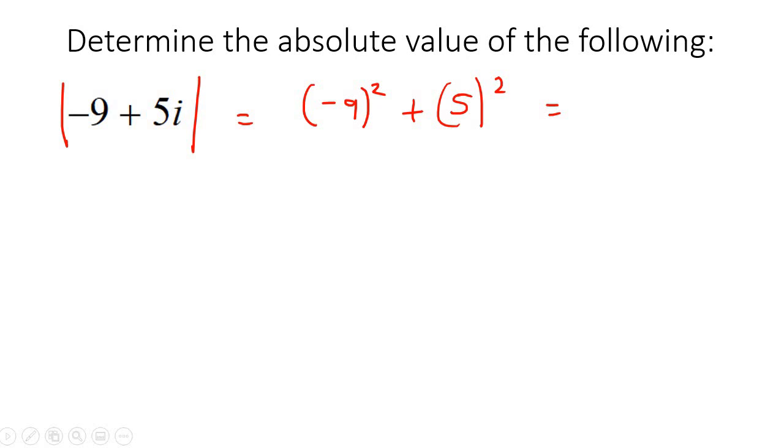And if you had to go work that out, it gives you 106. But then remember with Pythagoras, you always take the square root. So the square root of 106, you can just leave it as square root of 106.